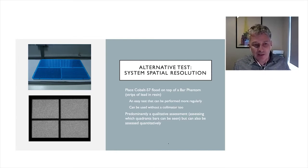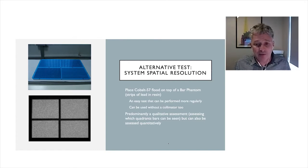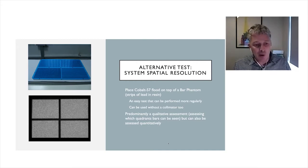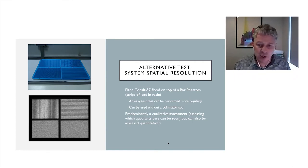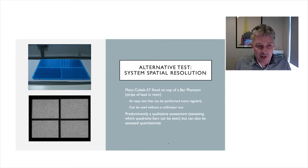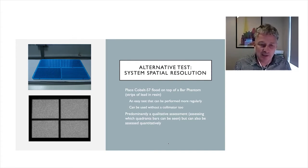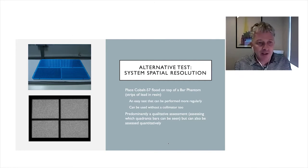Using the bar phantom, we can make a qualitative assessment of spatial resolution by counting the number of visible quadrants where bars can be resolved, and also assess linearity. The IAEA nuclear medicine QC toolkit provides software to extract quantitative spatial resolution measurements from bar phantom acquisitions. The bar phantom can also be placed on the crystal for intrinsic measurements, but this is risky and probably not necessary — using it with the collimator on is adequate.